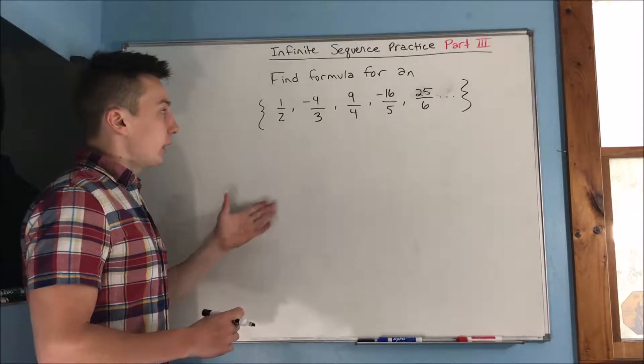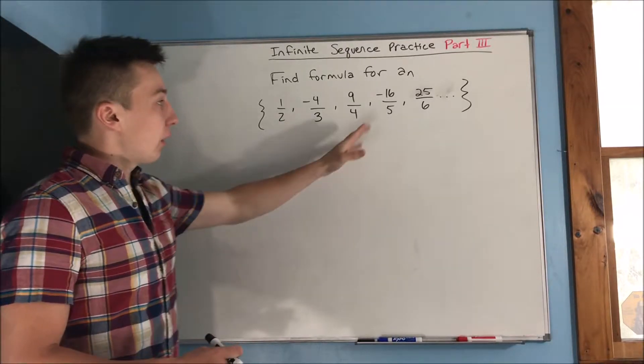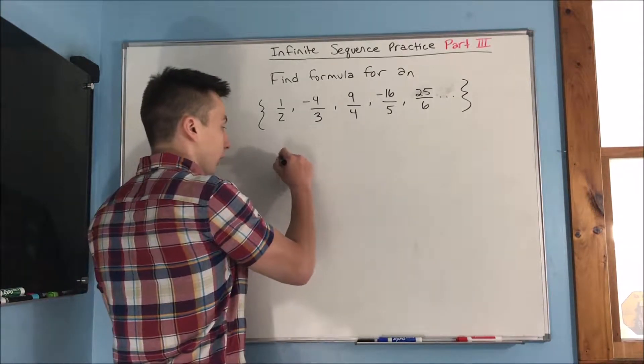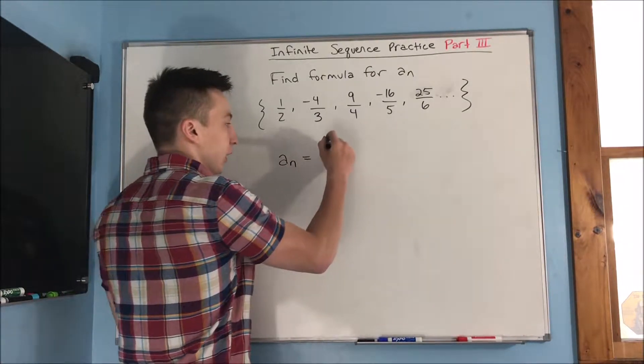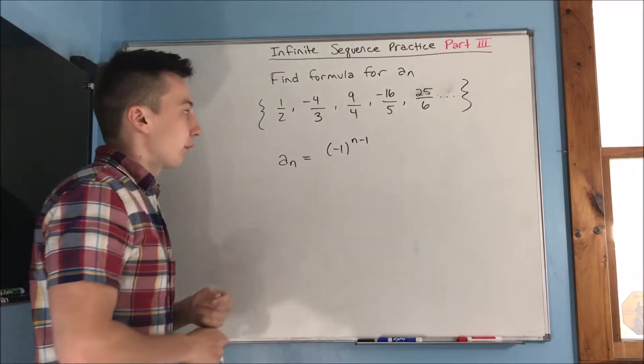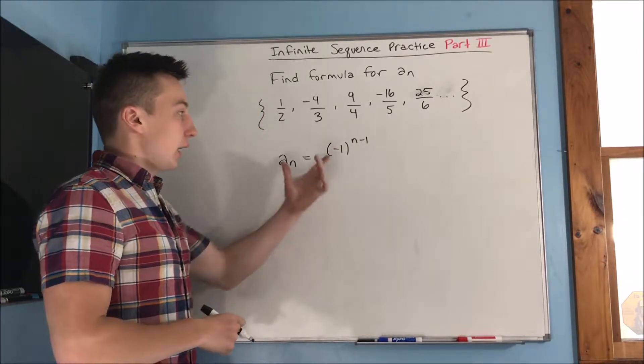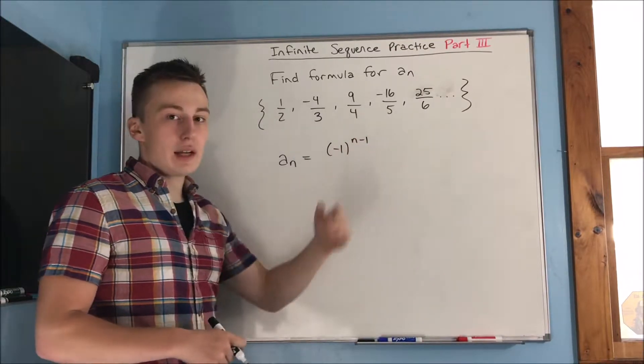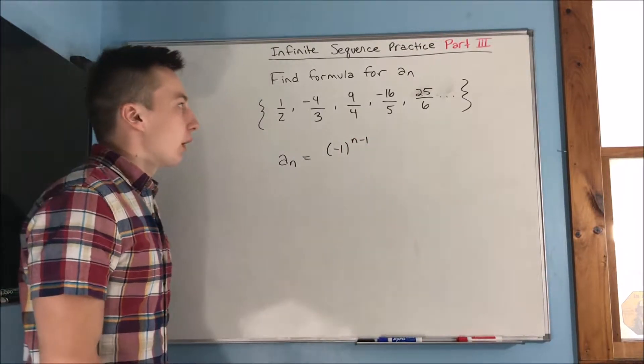So first thing we notice here, we have a negative on the even terms, which means that we'll start off with our a sub n equal to negative one to the n minus one. Because if it was just on the odd terms, we would have negative one to the n here. We've went over that before.